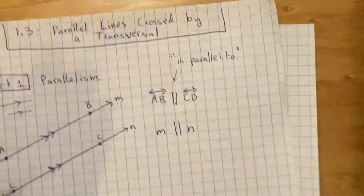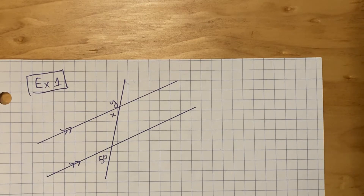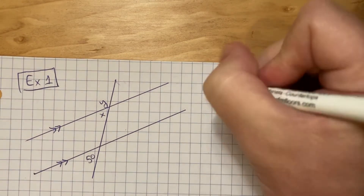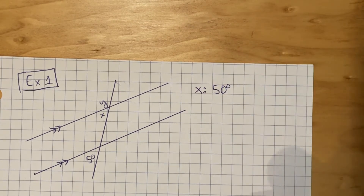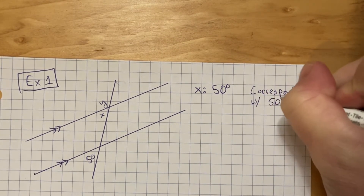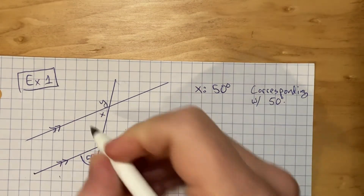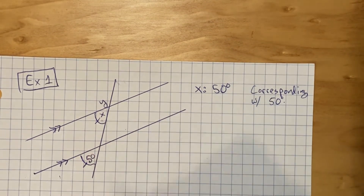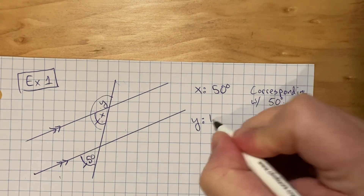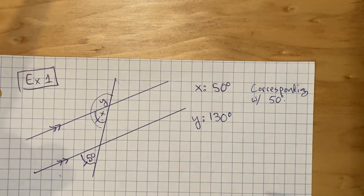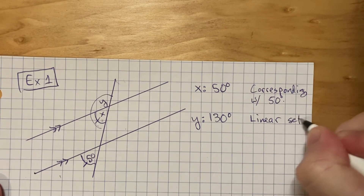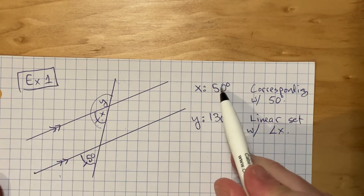Let me do two examples. Here's example one — copy this if you didn't get it already. These lines are parallel. What's the measurement of angle X, and what's the measurement of angle Y? X is 50 degrees because it's corresponding with the 50-degree angle — they are in the same position, both in the lower left, so they're corresponding. Angle Y makes a linear pair with angle X, so it's 130 degrees. A linear pair are two angles that form a straight line and must add to 180. So 180 minus 50 equals 130.